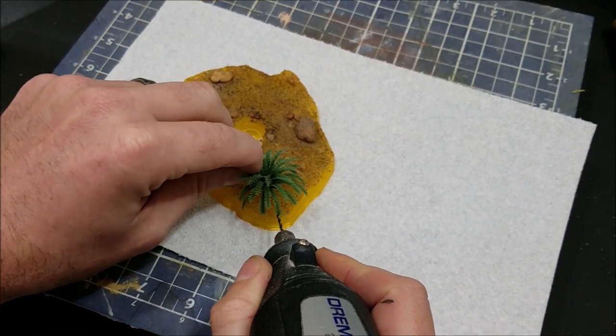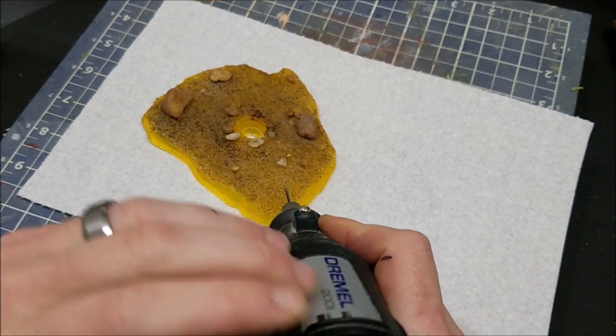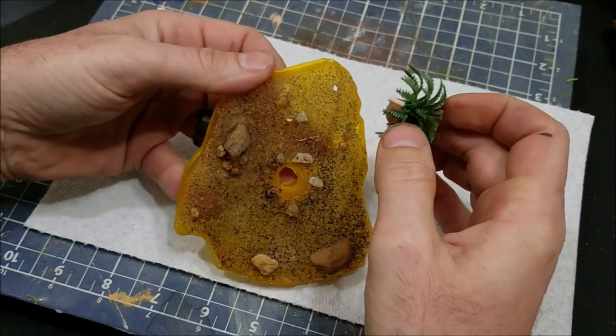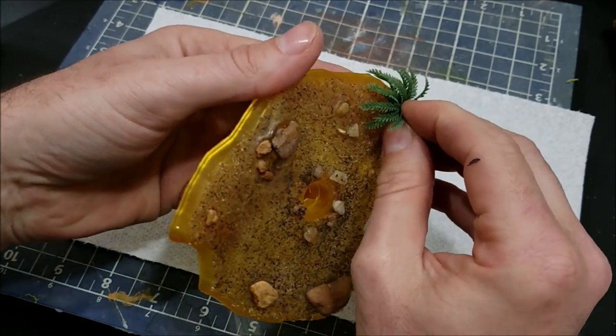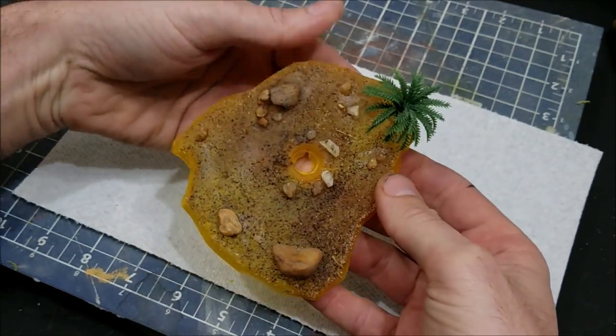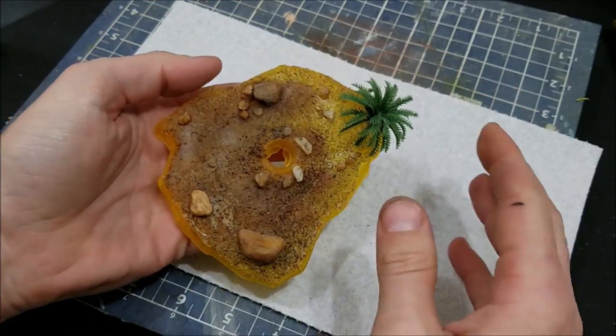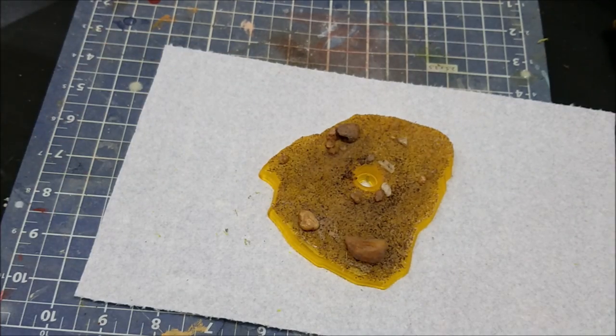Hobby Lobby and other craft stores do sell all kinds of different types of miniature plants that you could use on your base if you want to do something different. This is just what I happen to have on hand, and I like to make sure I don't waste anything, so we're using the tops of palm trees.